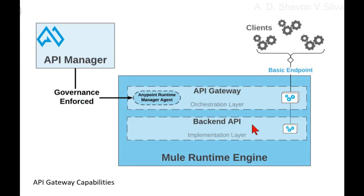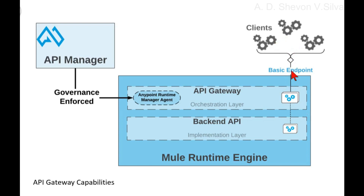Here you can see API Gateway capabilities. The Mule Runtime includes an embedded API Gateway. Using this Gateway, any user can, for example, apply a basic authentication policy on top of a Mule application, enrich incoming and outgoing messages, or add any other complex capability to an API without having to write any code.